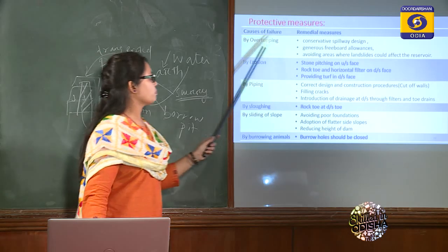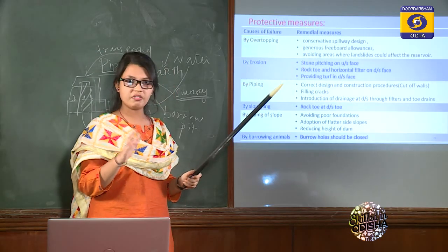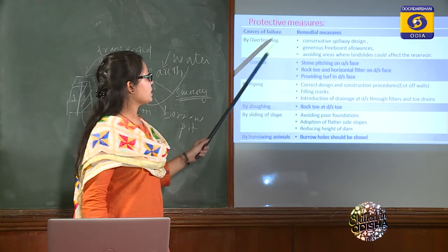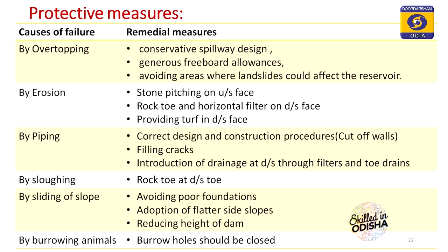Protective measures: overtopping failure can be prevented by conservative spillway design, generous freeboard, and avoiding areas prone to landslides. Erosion can be prevented by stone pitching, rock toe, horizontal filters, or providing turf and grasses on the downstream face. Piping failure can be prevented by cut-off walls and filling cracks with proper drainage at the downstream side. Sloughing failure can be prevented by providing rock toe at the downstream toe. Sliding of slope can be prevented by avoiding poor foundations, adopting flatter side slopes, and reducing the height of the dam. Burrowing animal damage can be prevented by closing the burrow holes.